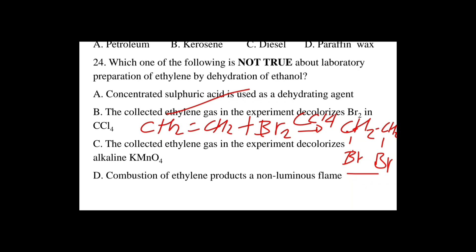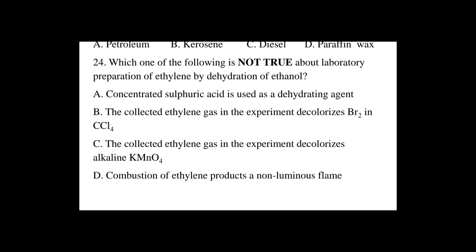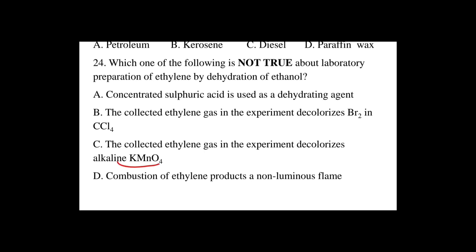Option C: ethylene decolorizes alkaline potassium permanganate through oxidation. Option D: alkenes with a double bond burn in oxygen with a luminous flame to form carbon dioxide and water.